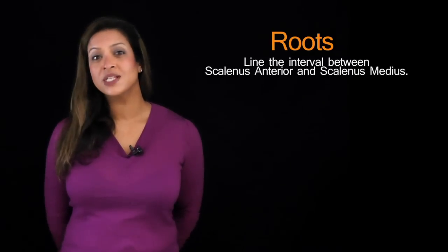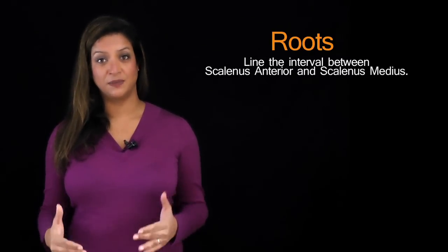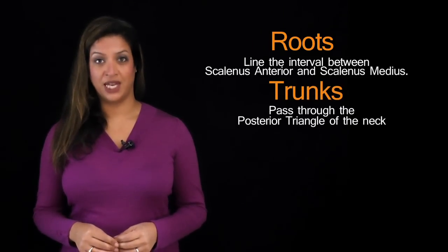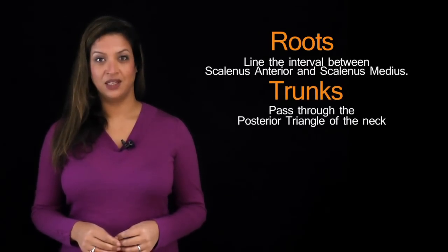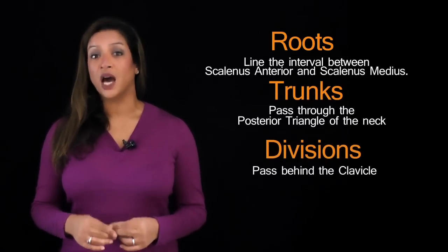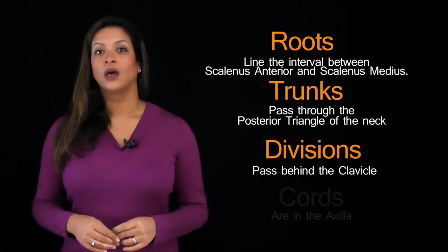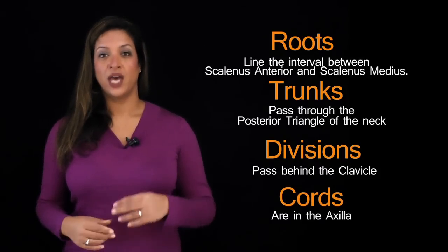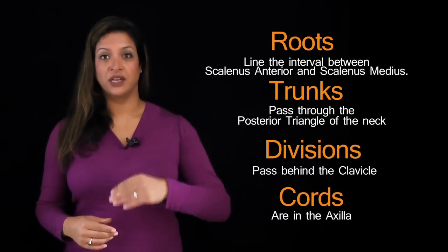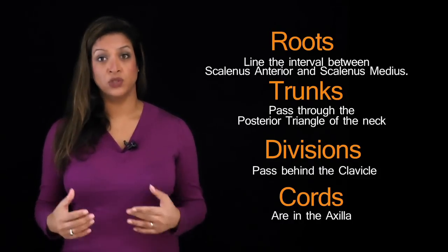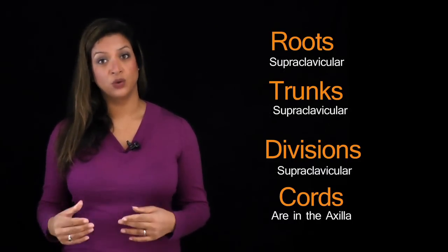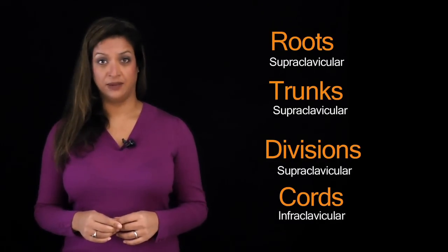The roots line the interval between the muscles scalenus anterior and scalenus medius. The trunks pass through the posterior triangle of the neck. The divisions are behind the clavicle, and the cords are in the axilla. So anything above the clavicle — the roots and trunks — are supraclavicular, and anything below, which is the cords, are infraclavicular.